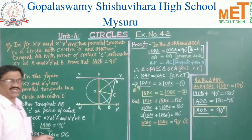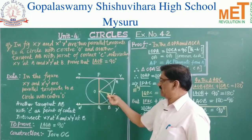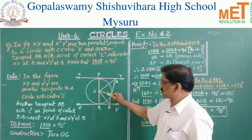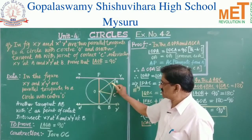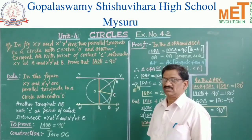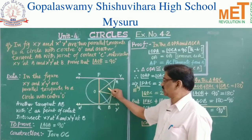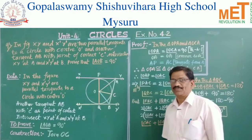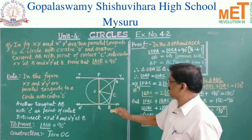To prove angle AOB = 90°, we perform a construction: join OC. When we join OC, it divides triangle AOB into two triangles above OC — triangles APO and ACO — and two triangles below OC — triangles BQO and BCO. Four triangles are formed in total.